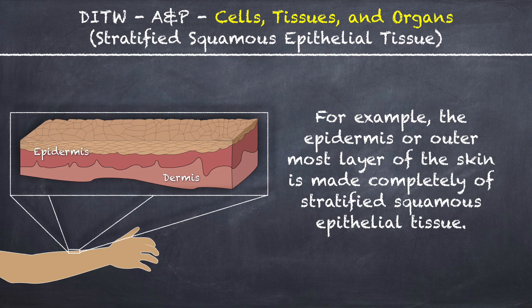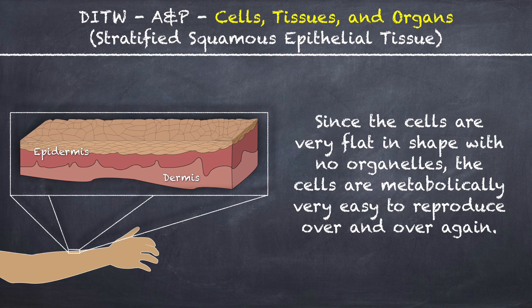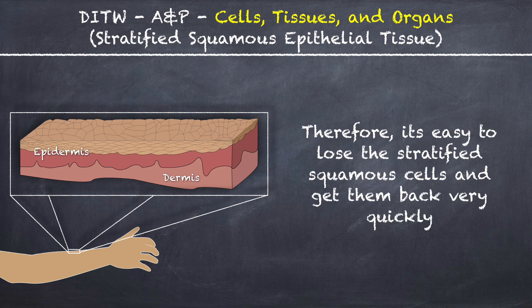For example, the epidermis or outermost layer of the skin is made completely of stratified squamous epithelial tissue. Most of the cells which compose the layers are completely dead, flat cells. Since the cells are very flat in shape with no organelles, the cells are metabolically very easy to reproduce over and over again. Therefore, it's easy to lose the stratified squamous cells and get them back very quickly.